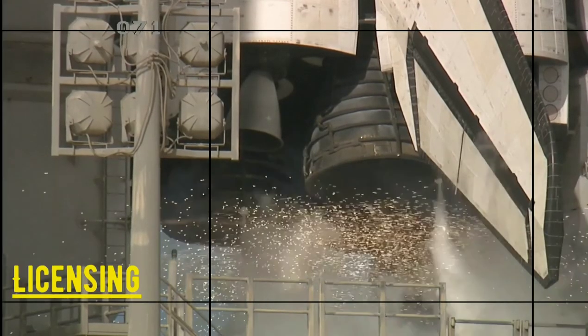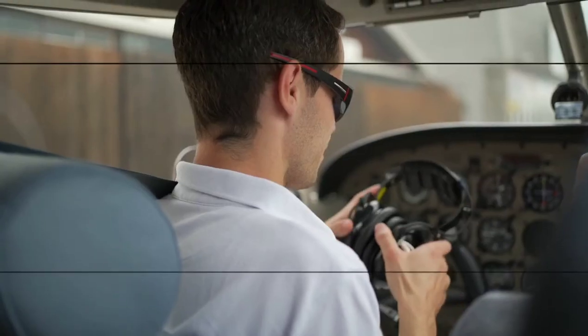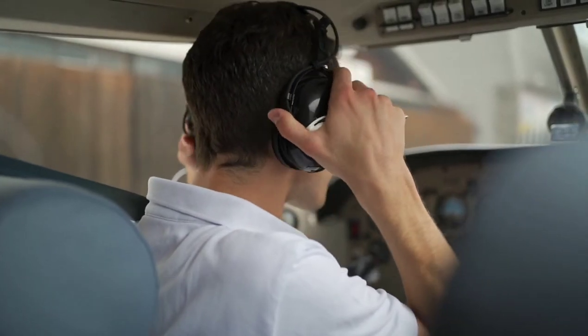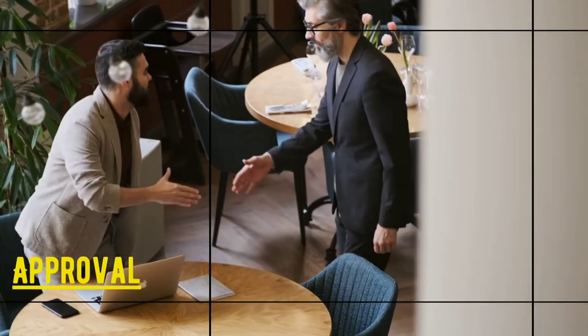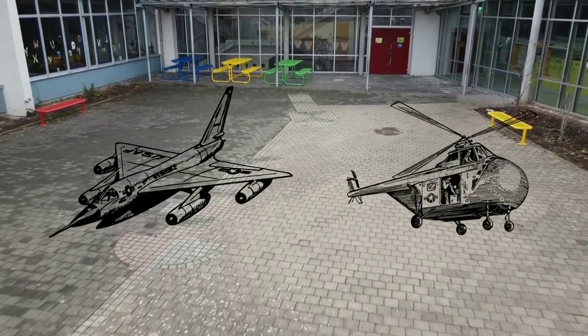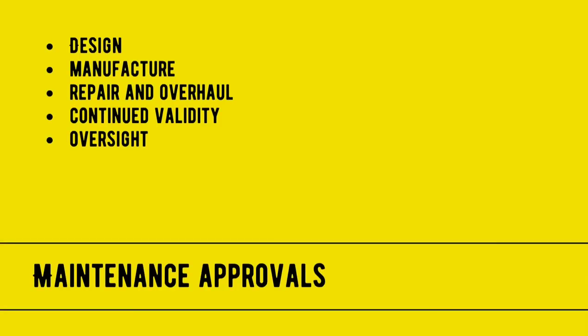Number two: licensing. DGCA is responsible for licensing of pilots, aircraft maintenance engineers, air traffic services personnel, and training related to aviation, with a view to ensuring a high quality of training. Number three: it is also responsible for approval of aircraft maintenance, repair, design, and manufacturing organizations, and their continued oversight.